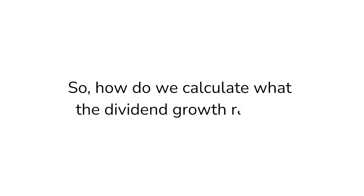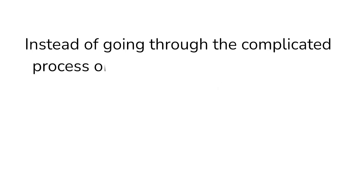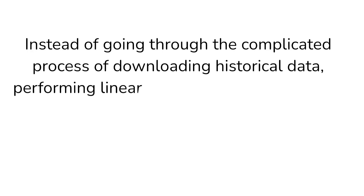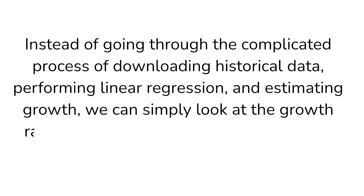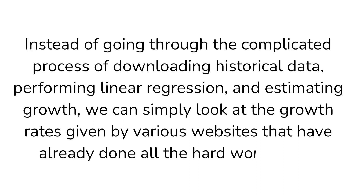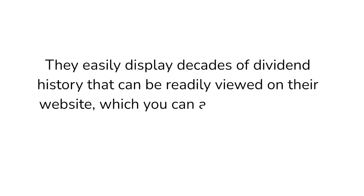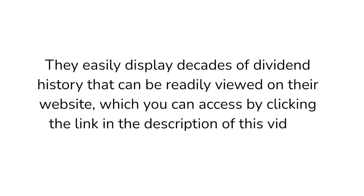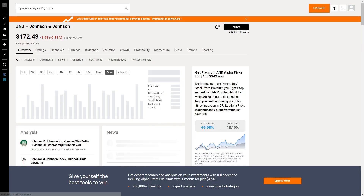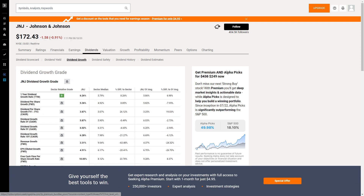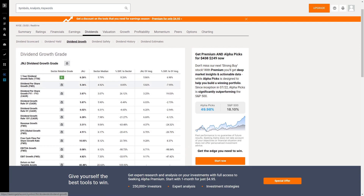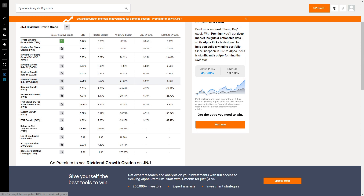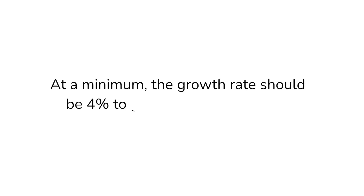So how do we calculate what the dividend growth rate is? Instead of going through the complicated process of downloading historical data, performing linear regression, and estimating growth, we can simply look at the growth rates given to us by various websites that have already done the hard work for us. The best free resource I've been able to find for this data is Seeking Alpha. They easily display decades of dividend history. Type the ticker symbol of the stock you're analyzing, then click on the dividends tab, then dividend growth. Here we can see the 1-year, 3-year, 5-year, and 10-year dividend growth rates. At a minimum, the growth rate should be 4% to grow ahead of inflation. Ideally, the growth is much higher than that.